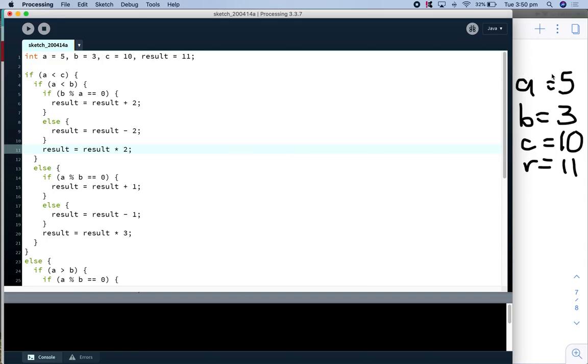So what I've got is I have my variables in the corner here so that I can keep track of them. So A is 5, B is 3, C is 10 and result is 11. I've just written R just to make that a bit easier.